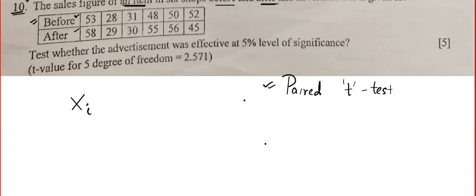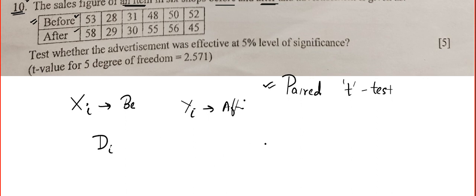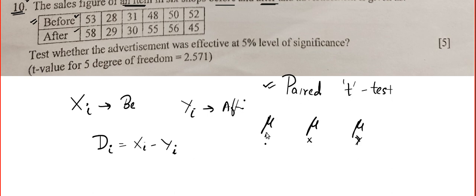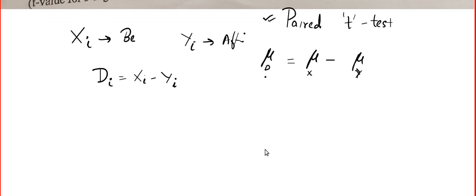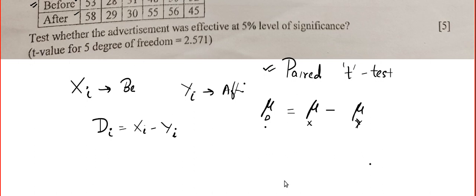Let xi be the before data and yi be the after data. Then let di equal to xi minus yi be the difference. mu x means the population mean before the advertisement, mu y means the population mean after the advertisement, and mu d equals mu x minus mu y, meaning the difference mean.